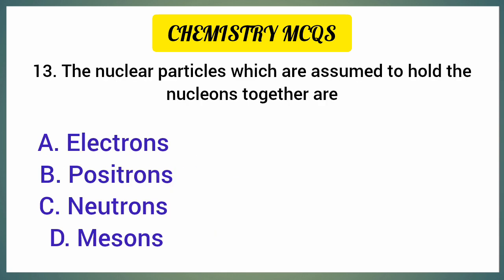The nuclear particles which are assumed to hold the nucleons together are — correct option is option D: Mesons.